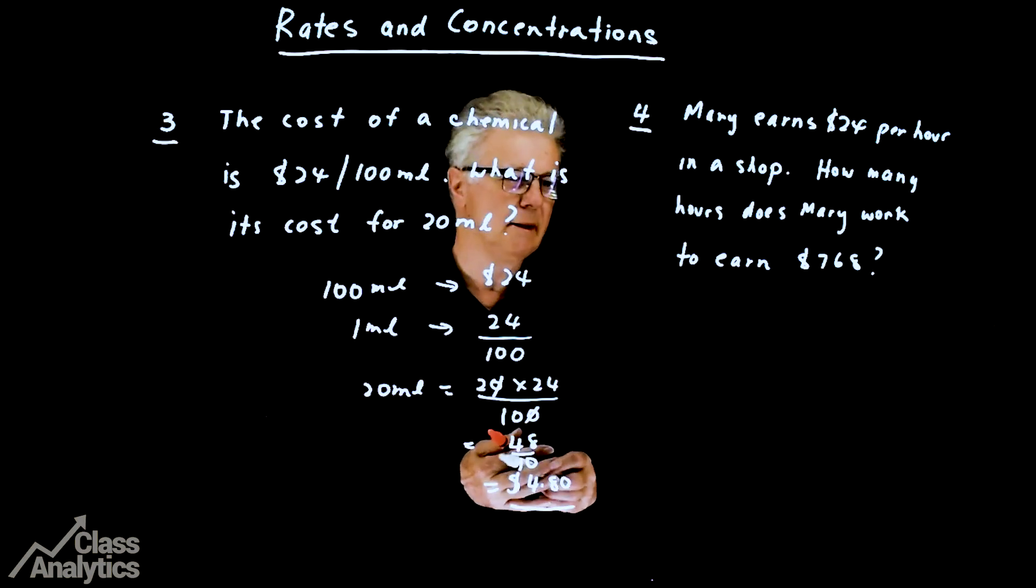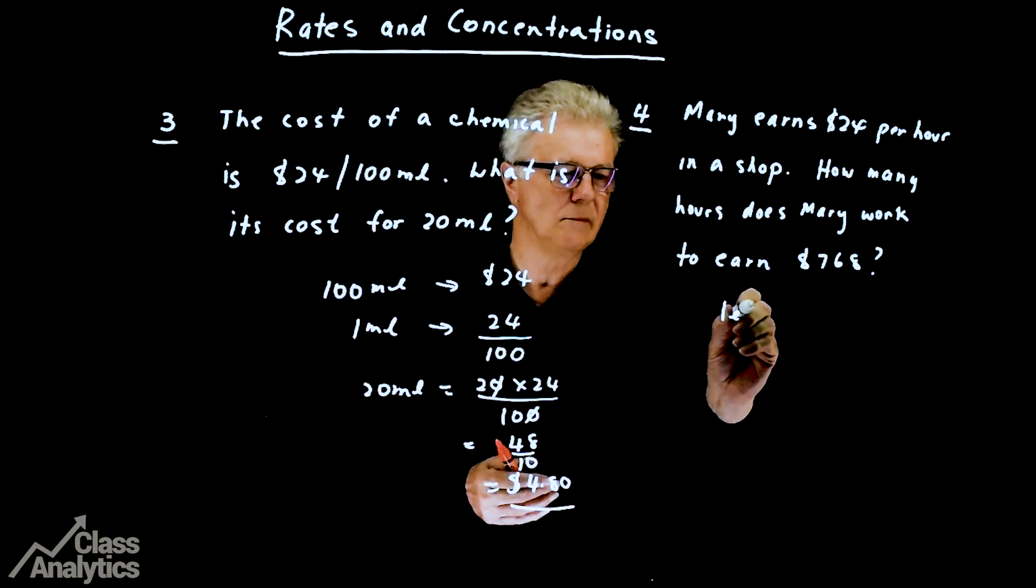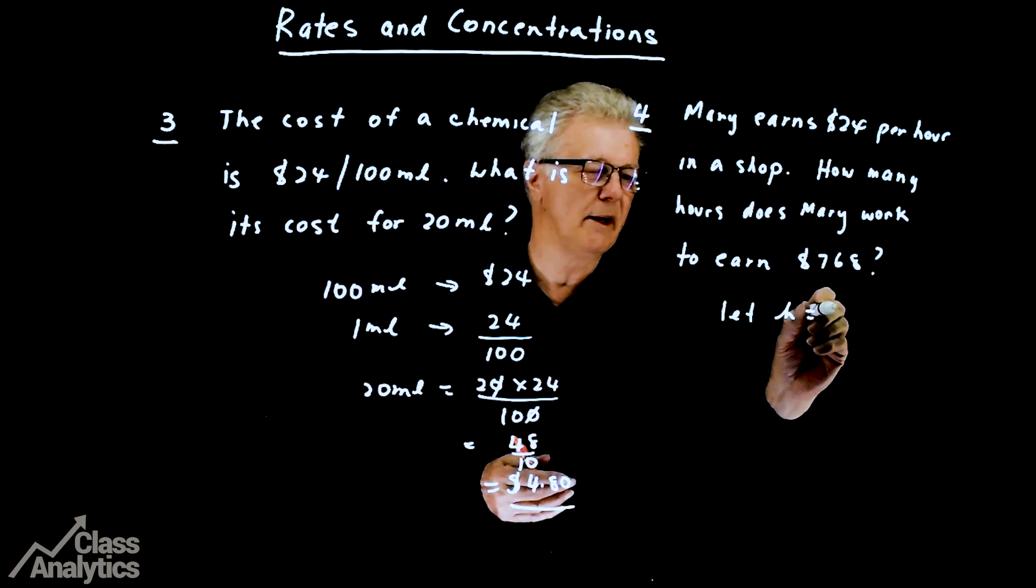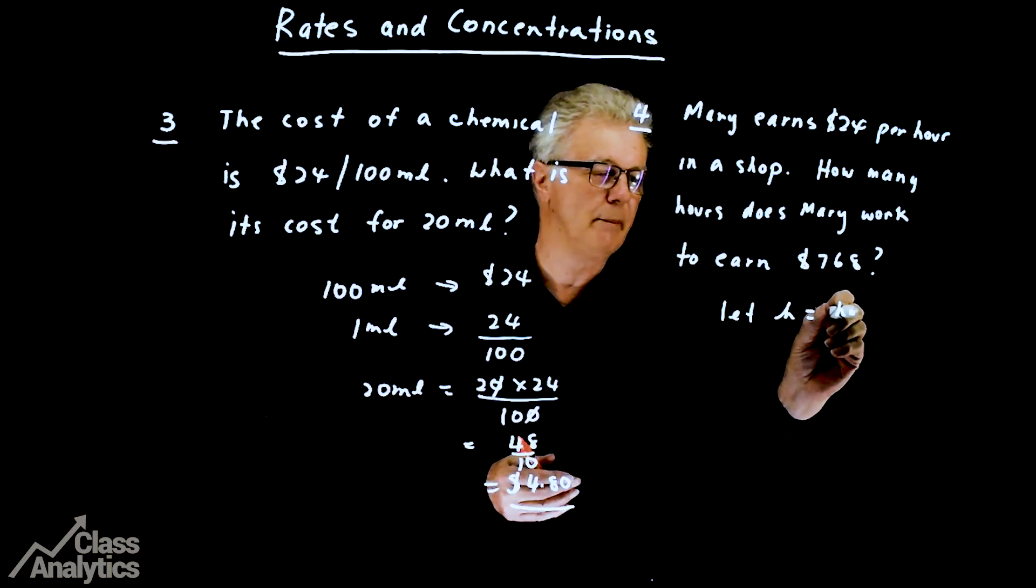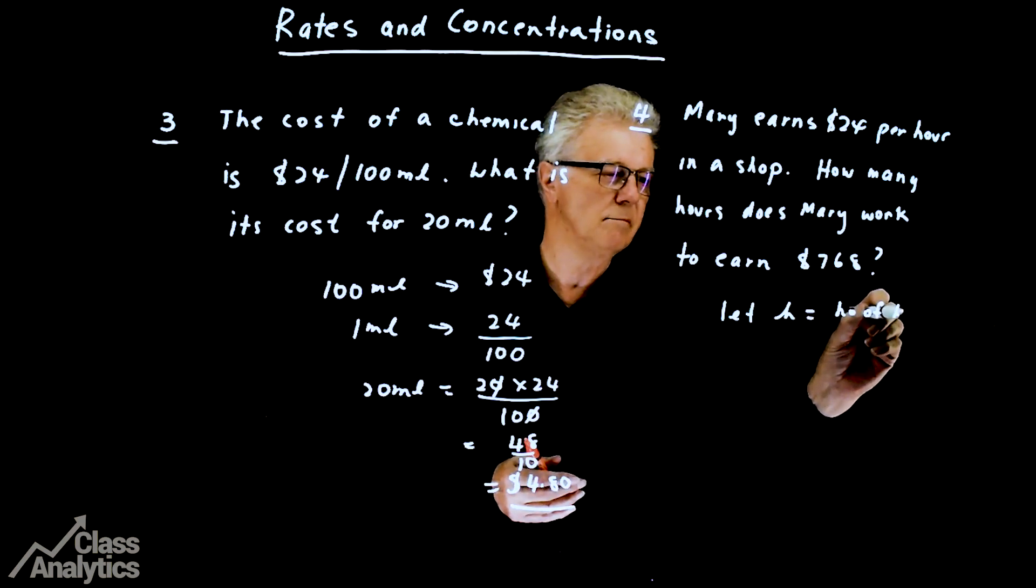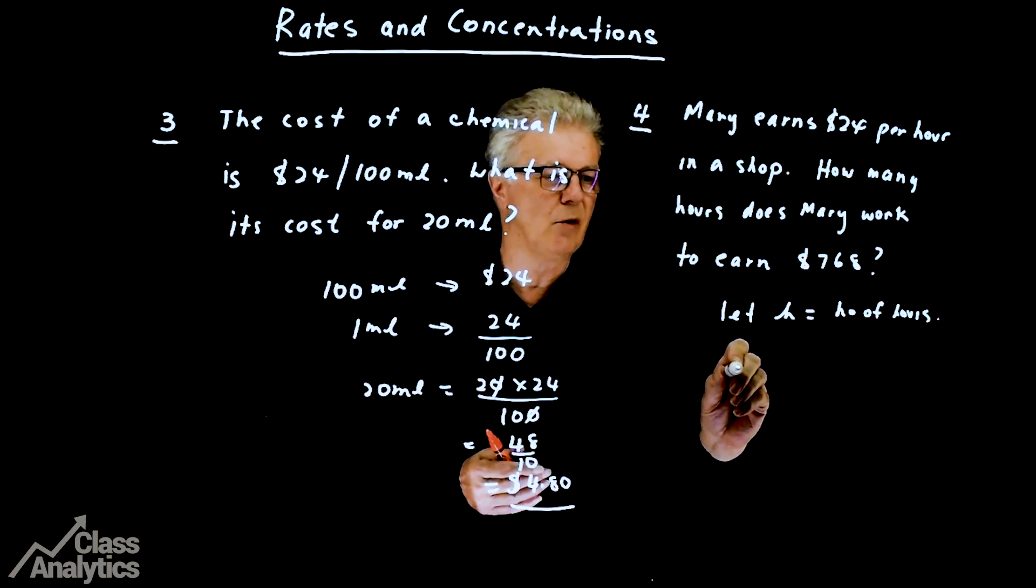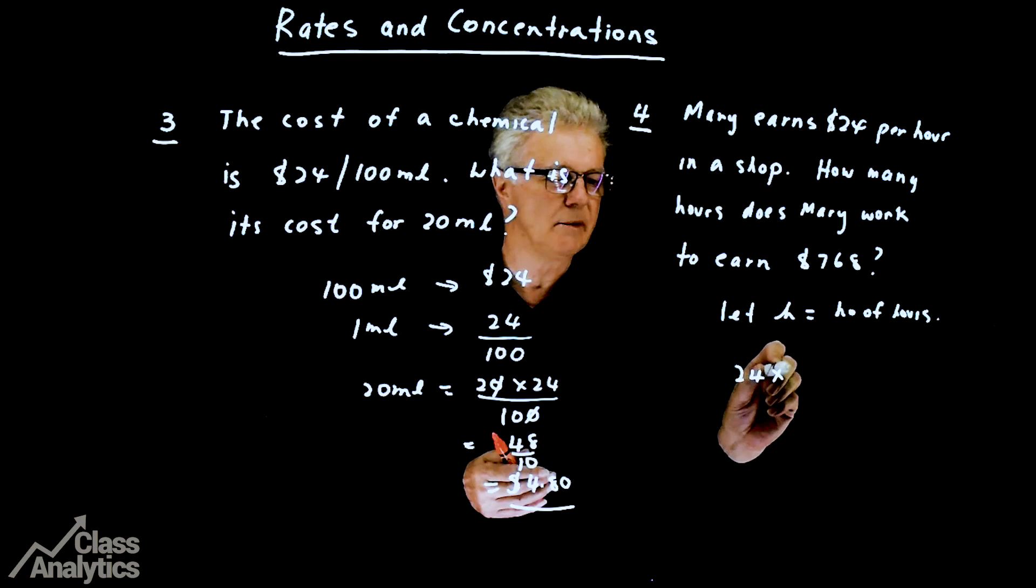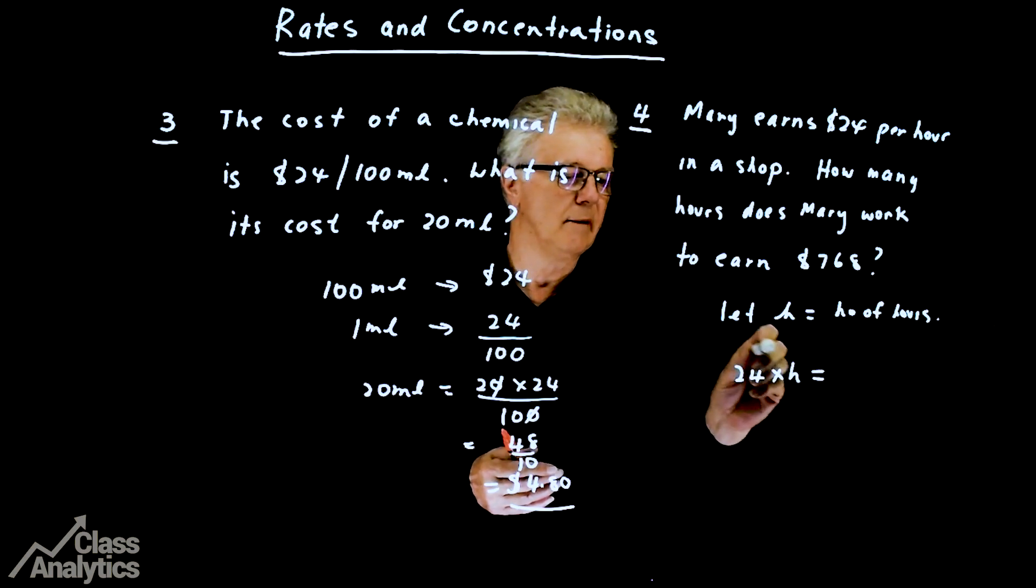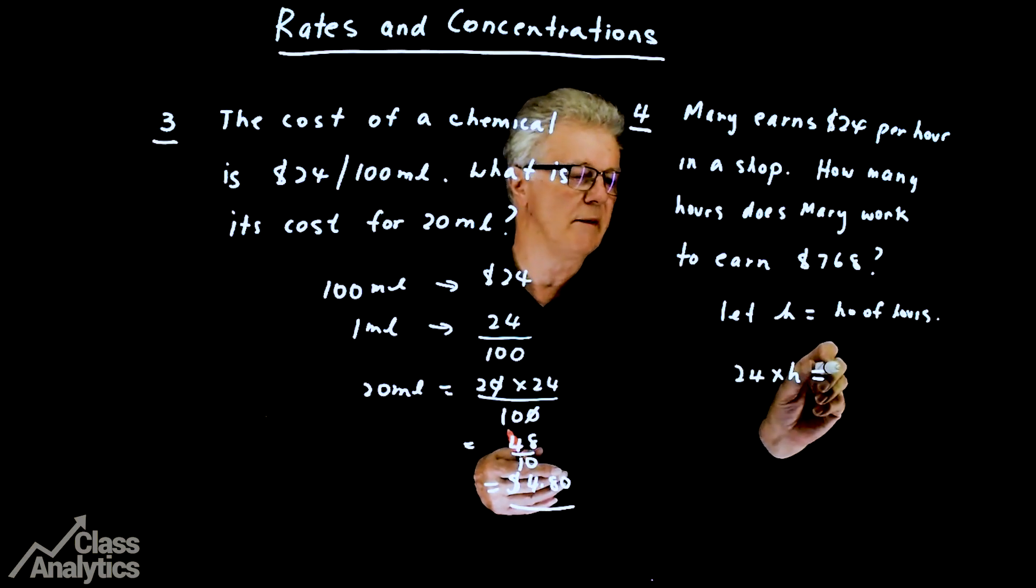Okay, so I'm going to let H equal the number of hours work. So in other words, 24 times H will give us the total of 768.